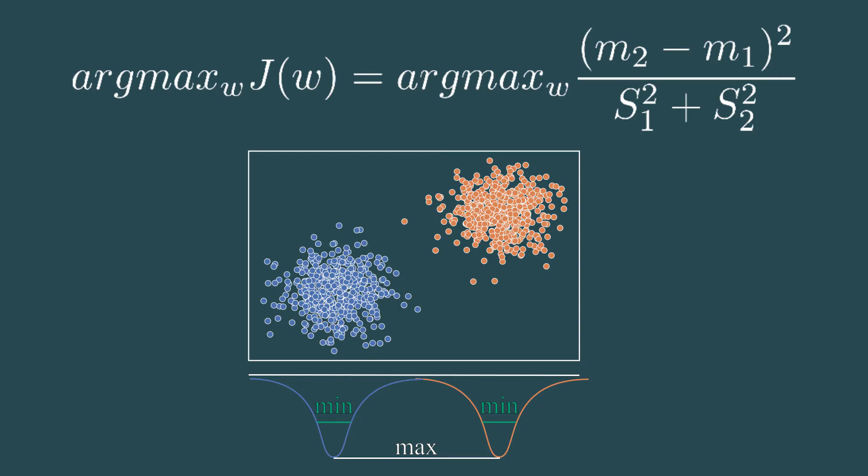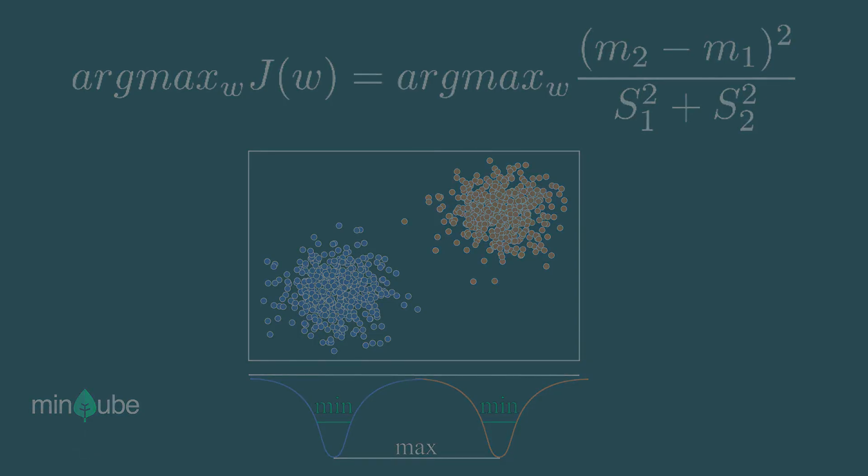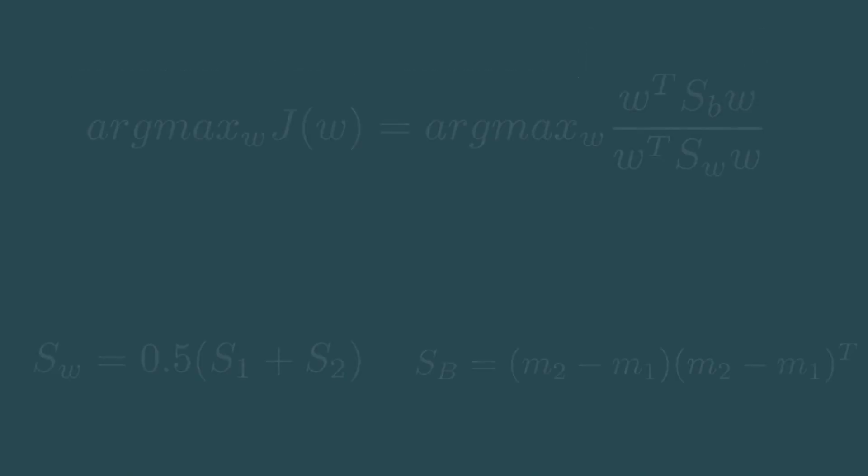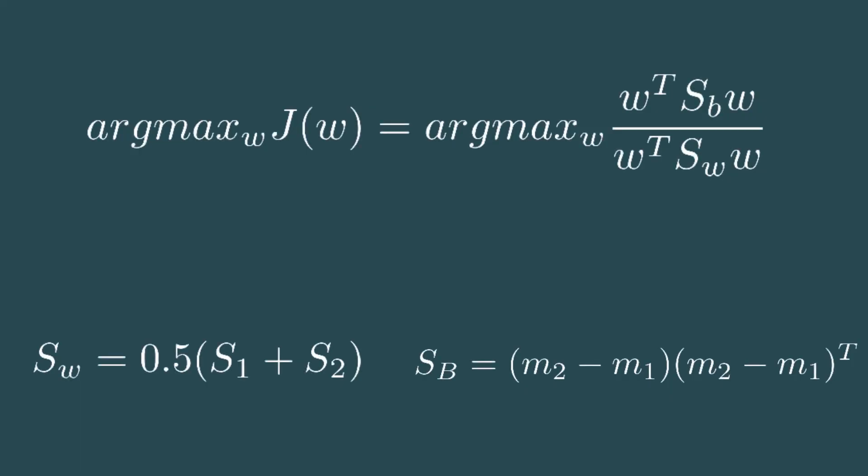We can also reformulate the Fischer criterion so that it becomes more obvious what v plays as a role. I am not going to show the exact reformulation steps because they are not that interesting to watch. Therefore, I am going to link to my website in the description where you can find references to the reformulation steps. So, the Fischer criterion can also be reformulated as v times Sv times v divided by v times Sw times v. As before, Sv is the squared difference of the means of both classes. And Sw is the average of both covariance matrices.